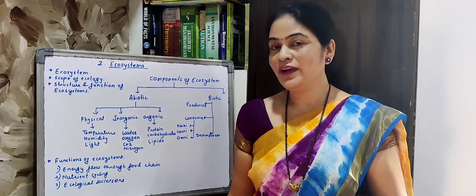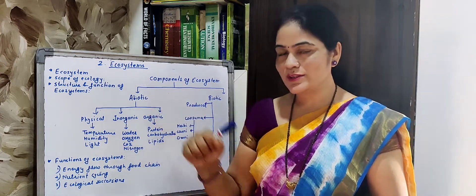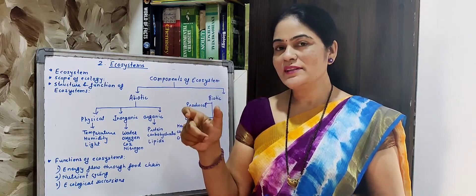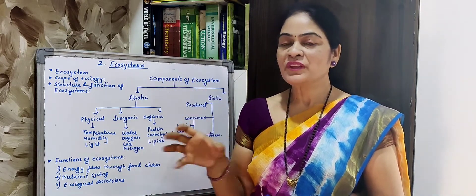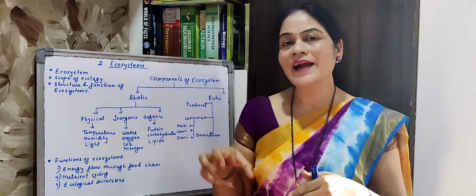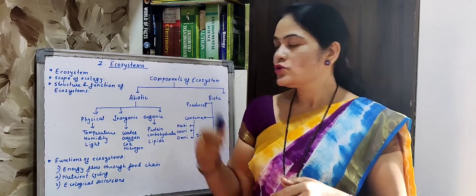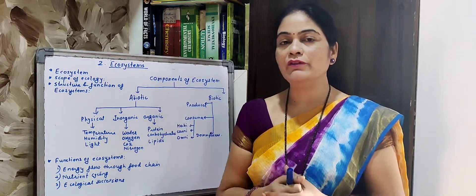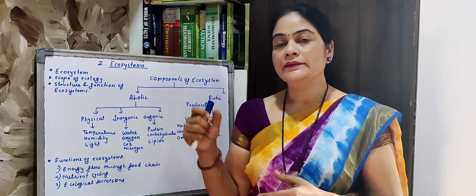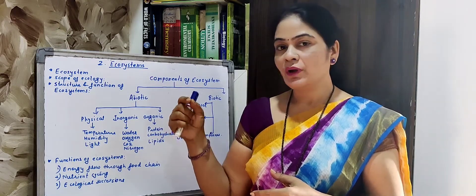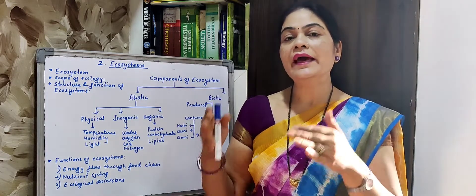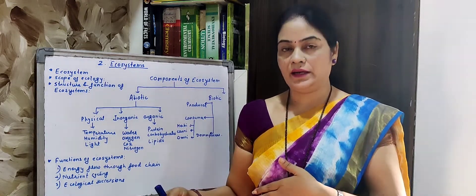So from today, let us start with the second chapter, that is Ecosystem. Ecosystem is derived from two words: eco plus system. Eco means biological, and system means a pattern in which many things work together. Ecosystem is derived from the Greek word 'Oike', meaning home, and system meaning systematic study. So ecosystem means the study of any organism in their home, in their habitat.